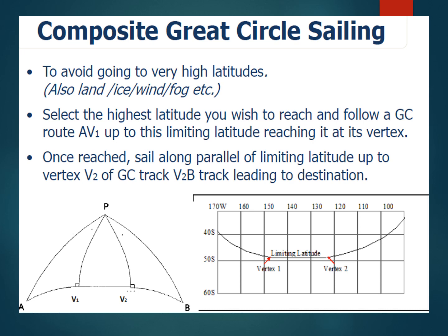When drawing a great circle course, if the master declares a limiting latitude, you follow the great circle course up to that latitude. Even if you haven't reached the true vertex, that latitude becomes your vertex. You then sail on a parallel track — from vertex 1 to vertex 2 you engage in parallel sailing — then resume your great circle course to the port of destination. This is called composite great circle sailing. I have also made videos on composite great circle sailing and calculating distances involved, so I recommend watching those as well.